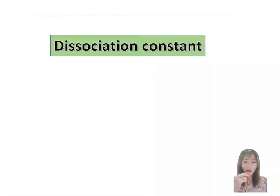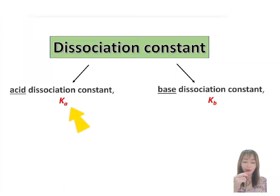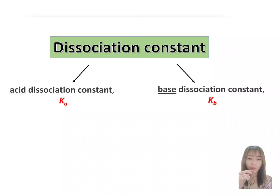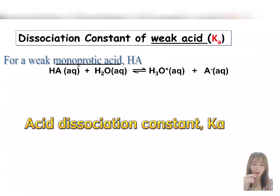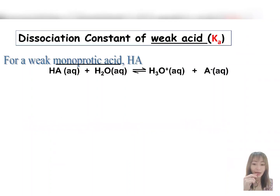Next, the dissociation constant. If the dissociation constant involves a weak acid, then we call it the acid dissociation constant, which is Ka. If the dissociation constant involves a weak base, then we call it the base dissociation constant, which is Kb. The acid dissociation constant, Ka, is a quantitative measure of the strength of an acid in solution. In other words, Ka measures how completely an acid dissociates in an aqueous solution.